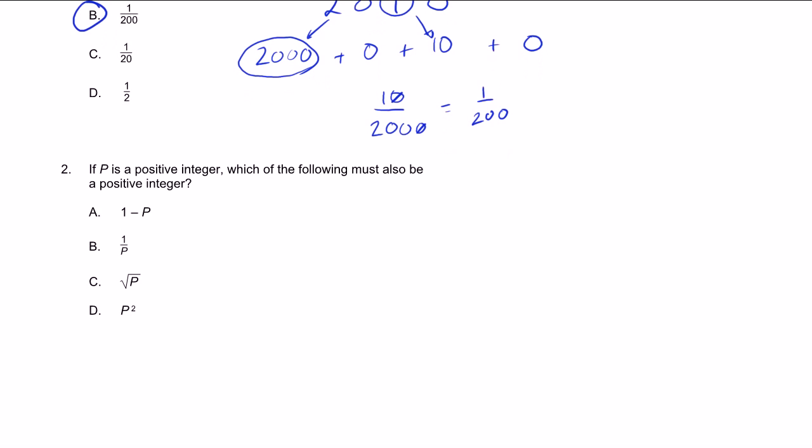Problem 2. If P is a positive integer, which of the following must also be a positive integer? Choice A, 1 minus P. Well, if P was 2, 2 is a positive integer, then 1 minus 2 would be equal to minus 1. And this is not a positive integer. This is a negative integer. So it can't be A.